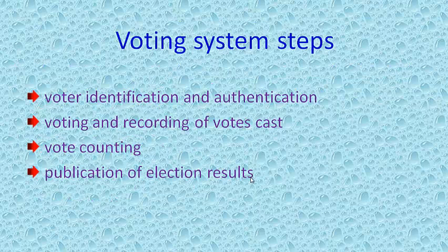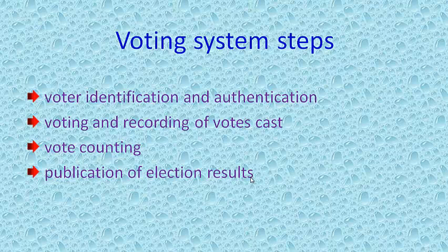The steps to be followed for voting: the first step is voter identification and authentication. Voter identification is required during two phases of the electoral process — the first for voter registration in order to establish their rights to vote, and the second at voting time, to allow a citizen to exercise their right to vote by verifying that the person satisfies all the requirements needed to vote.